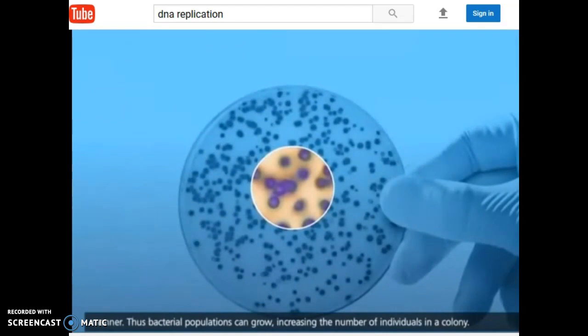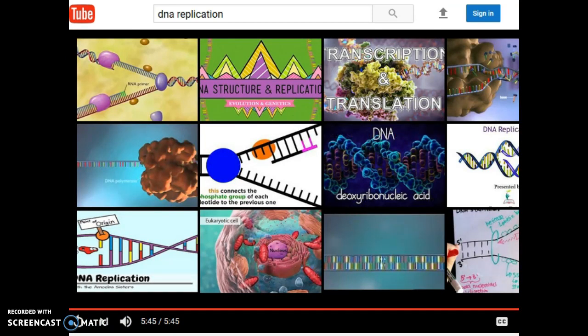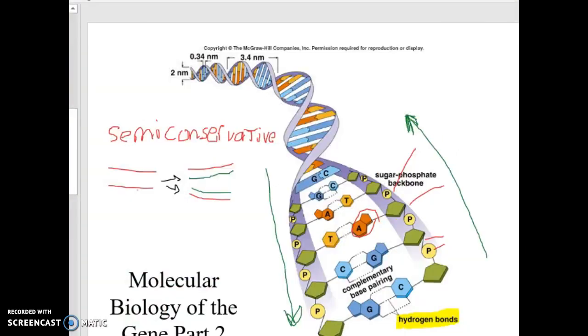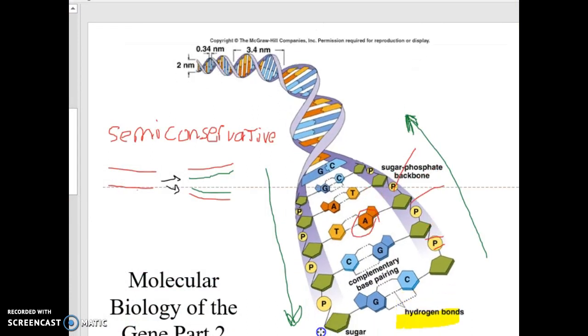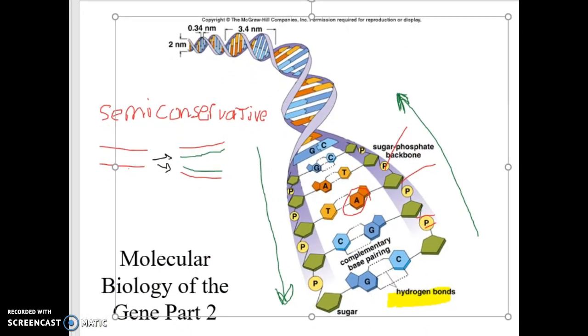Thus bacterial populations can grow, increasing the number of individuals in a colony. Okay, so a lot of terminology there that you're probably going, what's going on here? So we're going to break it down, make it basic, simple, key things that I want you guys to understand and to know.